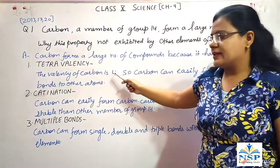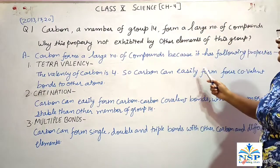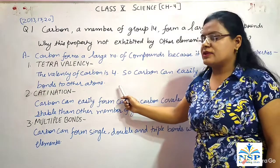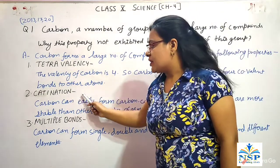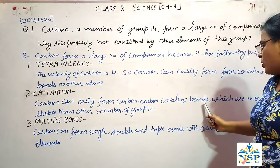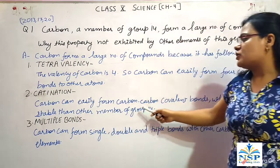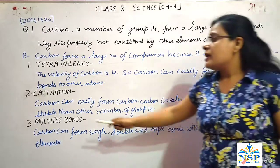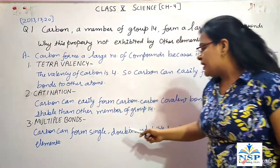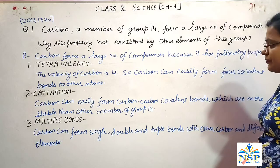Number 1: Tetravalency. The valency of Carbon is 4, so Carbon can easily form 4 covalent bonds to other atoms. Second one is Catenation: Carbon can easily form Carbon-Carbon covalent bonds which are more stable than other members of group 14. Third one is Multiple Bonds: Carbon can form single, double and triple bonds with other carbon and different elements.